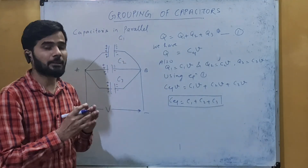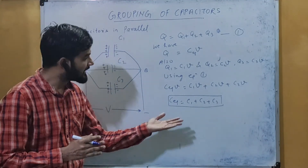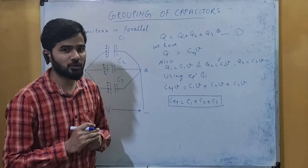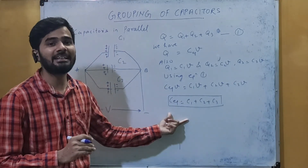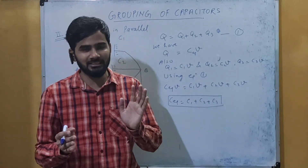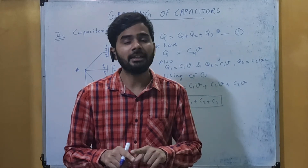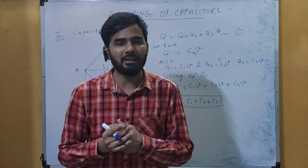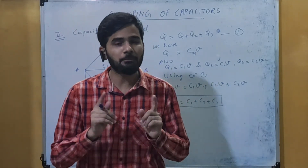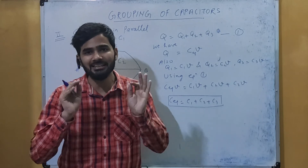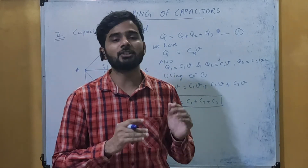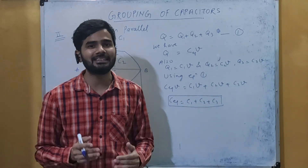You can now see that whatever formula we studied for the series combination of resistors is the same as for the parallel combination of capacitors — the formulas for capacitors and resistors are exactly inverse. To remember: in series combination the potential gets divided but charge remains the same, and in parallel combination the voltage remains the same but the charge is divided. This is all about the grouping of capacitors in series and parallel.